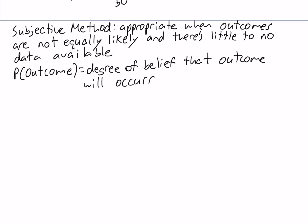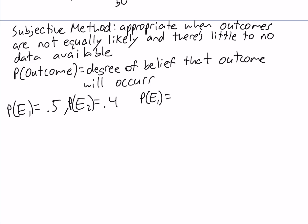For example, if you assign the probability of outcome 1 as 0.5 and the probability of outcome 2 as 0.4, with only two outcomes, the first requirement is satisfied but the second is not, because 0.5 + 0.4 = 0.9, which is not equal to 1. So with the subjective method, you need to be careful to ensure that both requirements are satisfied.